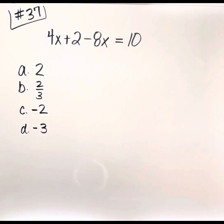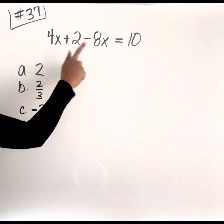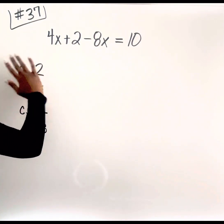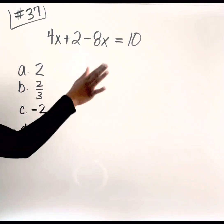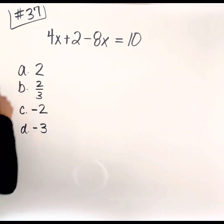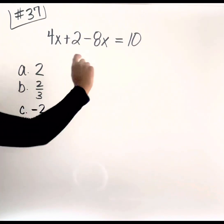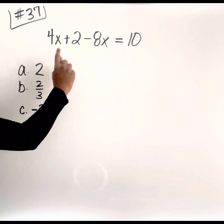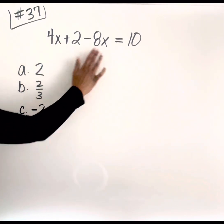Let's take a look at question number 37, which is an example of solving equations in one variable. When we say one variable, you see how we have X and X — it's the same variable. For this exam, you will not be faced with questions that include X and Y, or X, Y, and Z. It's only going to be one single variable. So here we have 4X plus 2 minus 8X is equal to 10. The goal is to get 1X by itself and figure out the value that makes it true.